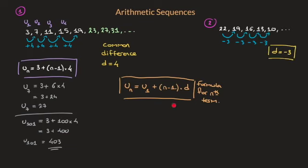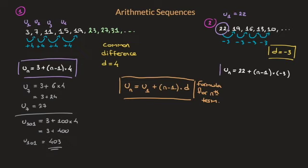If we want to define the formula for the nth term of this arithmetic sequence, the two things we need are the common difference — negative 3 — and the first term, u sub 1, which equals 22. Using the generalized formula, the nth term equals 22 plus (n minus 1) times negative 3. And that's this sequence's formula for the nth term.